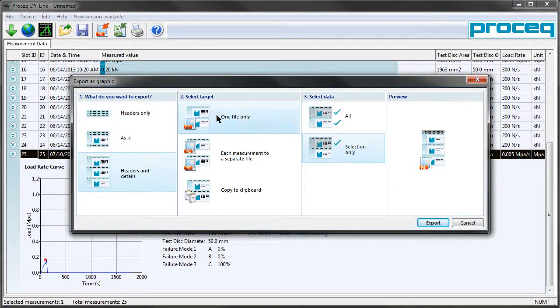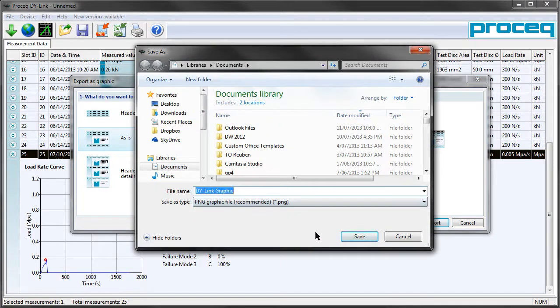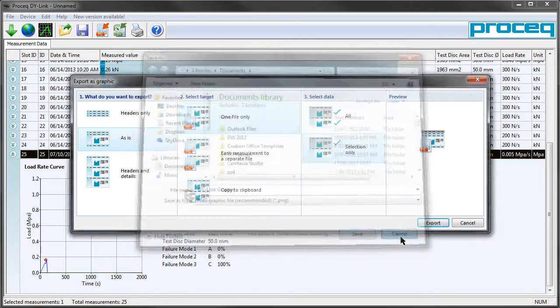The collected data is able to be exported as an Excel format or as an image. It can also be sent to the printer. This will be very familiar to you if you used any of the other Proceq output software such as Hammer Link.